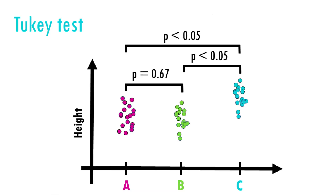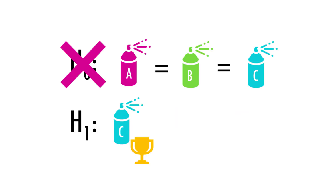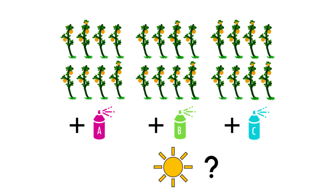Tukey's test tells us that fertilizer C is the winner — it made plants grow significantly taller than A and B. But wait, we forgot to take into account sunlight conditions. Now we're testing two independent variables at the same time, and maybe how they interact.